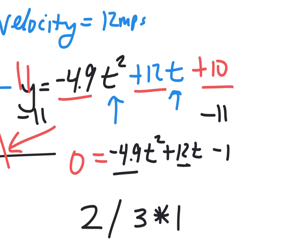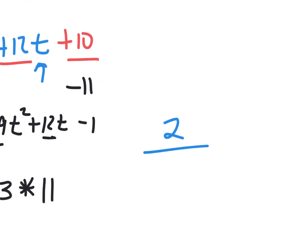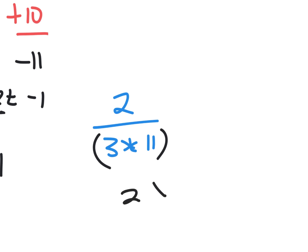Why were some kids getting wrong answers on the quiz? Because they were typing in 2 divided by 3 times 1. If you have a big fraction — like 2 over 3 times 11 — do you get that you have to put parentheses here or it will goof up the order of operations? If I just said 2 divided by 3 times 11, your calculator doesn't know that you wanted that to be like a fraction unless you put parentheses. A lot of people got wrong answers because of that.